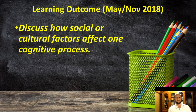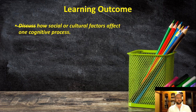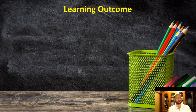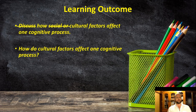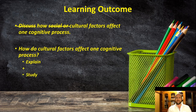The learning outcome we're reviewing here is how social cultural factors affect one cognitive process. We're going to focus on cultural factors, so really the key question we're looking at is: how do cultural factors affect one cognitive process? What we have to do is explain an answer to that question and have a study, some evidence to support it.